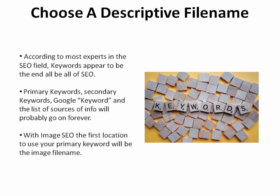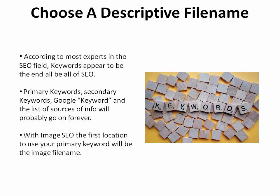Choose a descriptive file name. By now on your journey through online marketing, you've probably heard the word keyword. According to most experts in the SEO field, keywords appear to be the end-all be-all of SEO — primary keywords, secondary keywords, Google keywords, and the list of sources of info will probably go on forever. With image SEO, the first location to use your primary keyword will be the image file name.